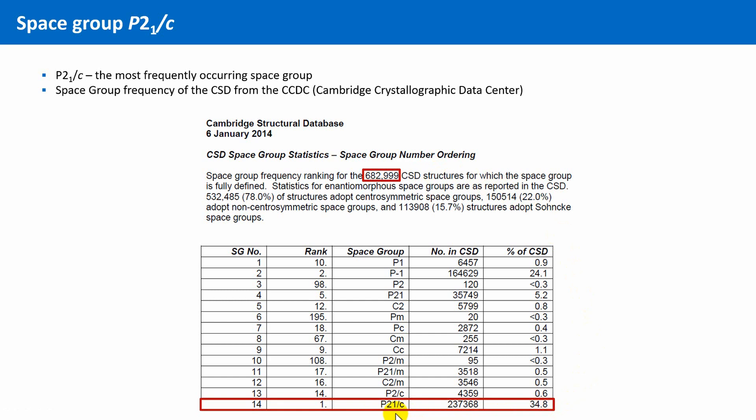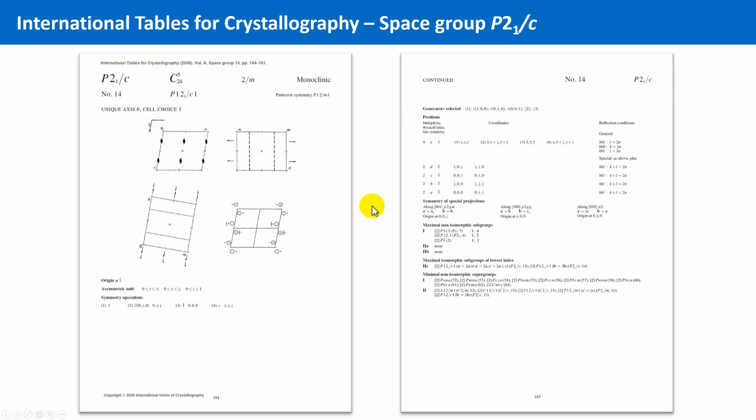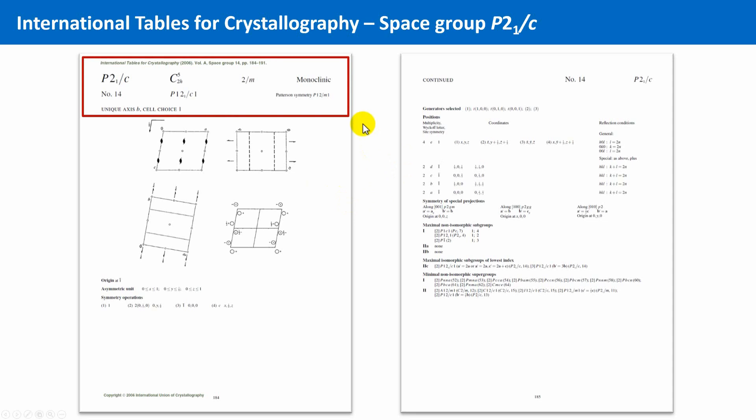Let's look at the entry of P21 over C in the international tables. Here you see once more an overview of the two pages which are reserved for this entry in the tables, and we will again begin with the header. This looks almost familiar to us by now, but two things are different compared to the first example we discussed, the space group PMM2.